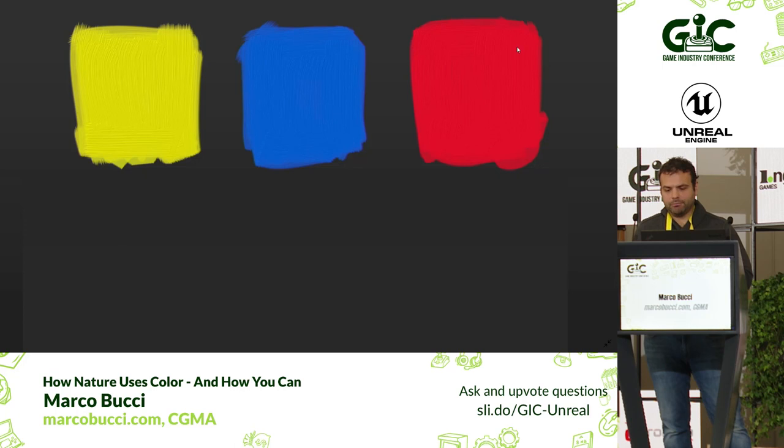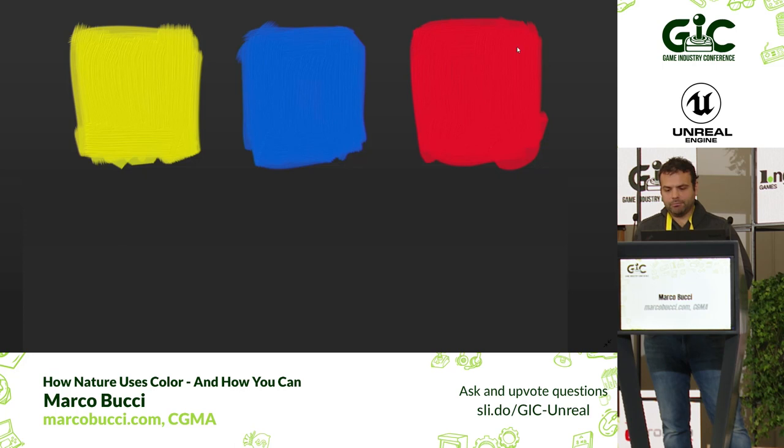You can paint yellow, blue, red perfectly flat like that — or you can do the bottom one, which is what nature does. If your style is flat colors, do the top one. But if you're interested in learning from nature, you should be painting your colors with vibrations, because that still looks yellow, blue, and red — but there are little vibrations of different colors within each.